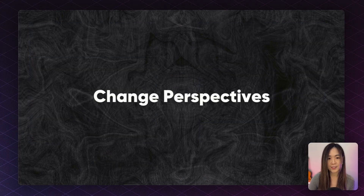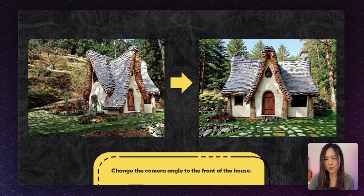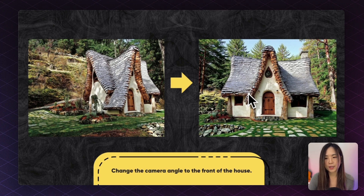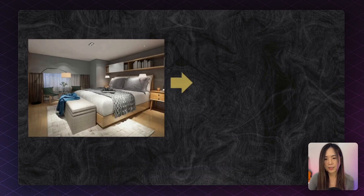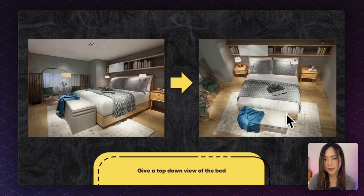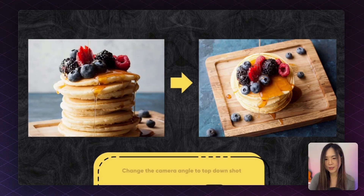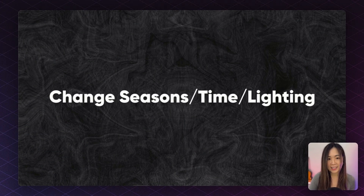I also tested perspective changes, like rotating a house from a side view to the front view. The shape wasn't quite correct — there was a missing window and the roof proportion was off, likely because the house was designed asymmetrically. With more conventional buildings it should work okay. Similarly, I asked it to change the camera angle of a room from a top-down view of a bed and it created the correct layout. You can also turn food photography to a different angle.